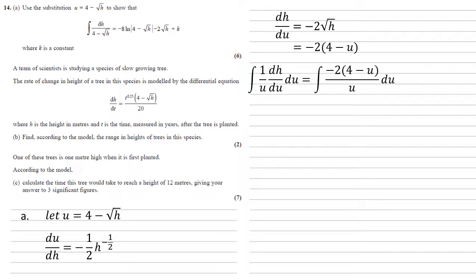Expanding the top and dividing through by that u on the bottom gives us the integral of minus 8 over u plus 2 with respect to du. So we can do this now, we've got minus 8 log natural u, the 2 becomes 2u, and we've got our constant c on the end.